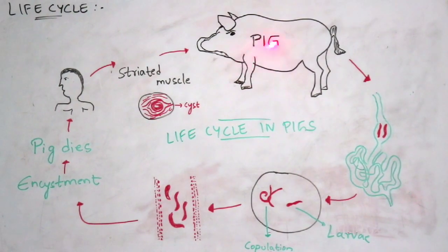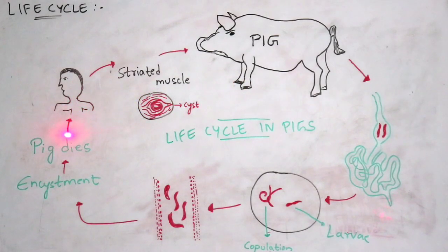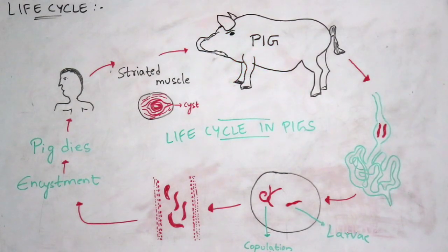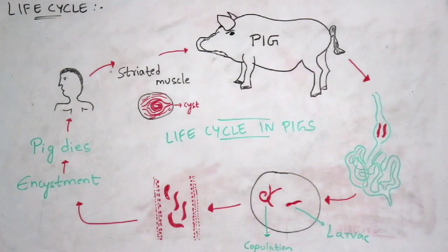Pigs have a small intestine. The striated muscles affected in humans are consumed by the pig, and the cysts within those muscles enter the pig. From the mouth of the pig, the cysts enter into the small intestine, where larvae undergo copulation — both male and female larvae.